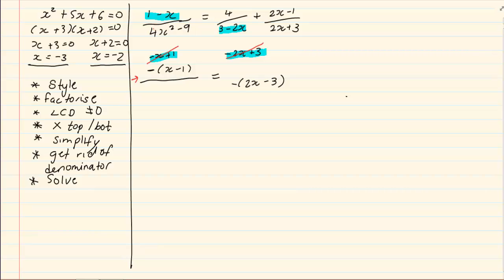Now we factorize whatever is possible. 4x squared minus 9 can become 2x minus 3, 2x plus 3. On the second expression we have got 4, and on the third expression we have got 2x minus 1 all over 2x plus 3.